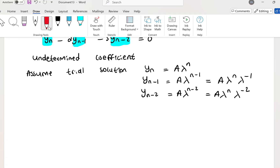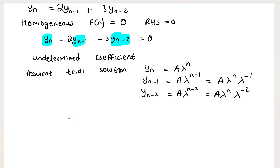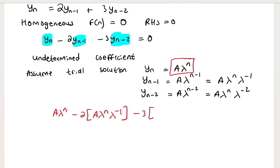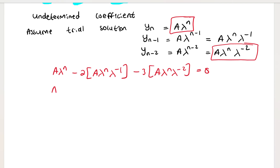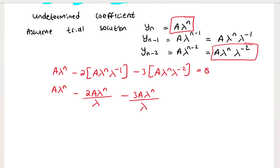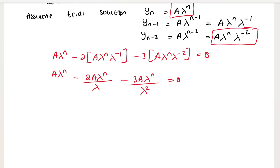Substituting, I get: A·λ^n minus 2 times A·λ^n·λ^(-1) minus 3 times A·λ^n·λ^(-2) equals zero. Distributing gives A·λ^n minus 2A·λ^n/λ minus 3A·λ^n/λ² equals zero.